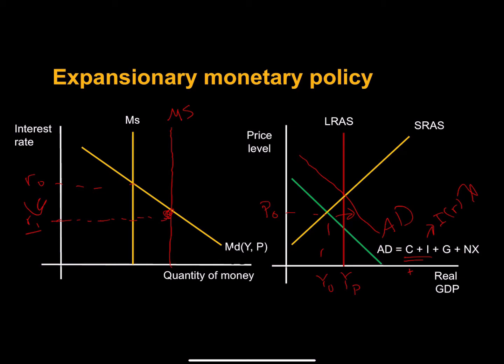There may be a stimulating effect on consumption as well — some models include consumption, some don't. But either way, we get a rightward shift in aggregate demand. We should see an increase in real GDP, a reduction in unemployment, and also an increase in the price level. That's successful expansionary monetary policy.